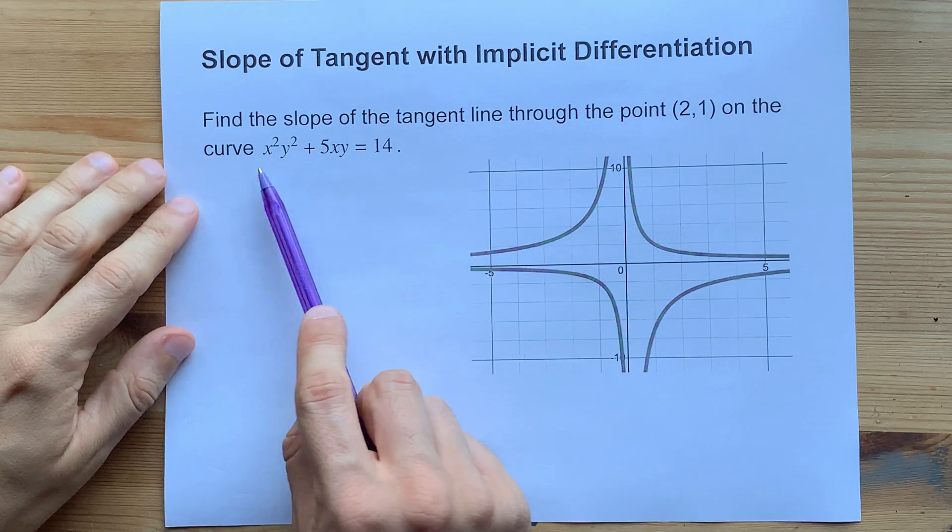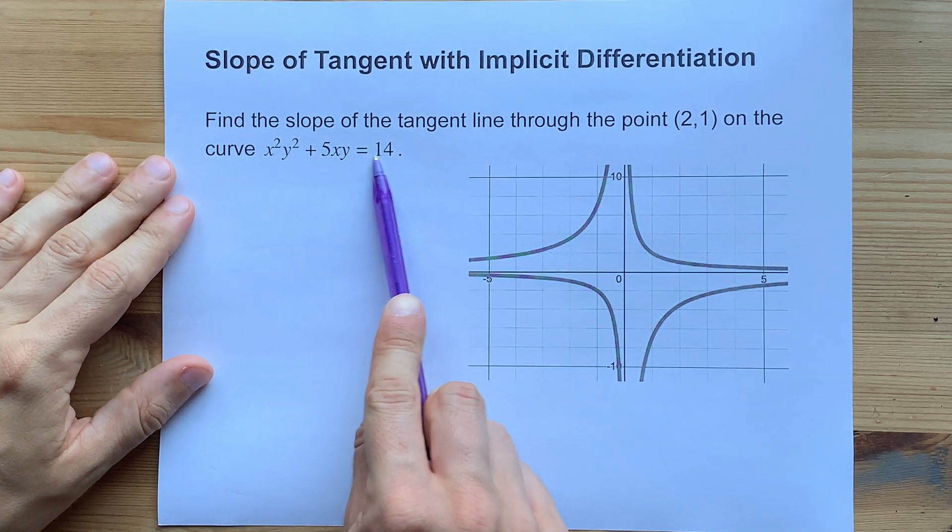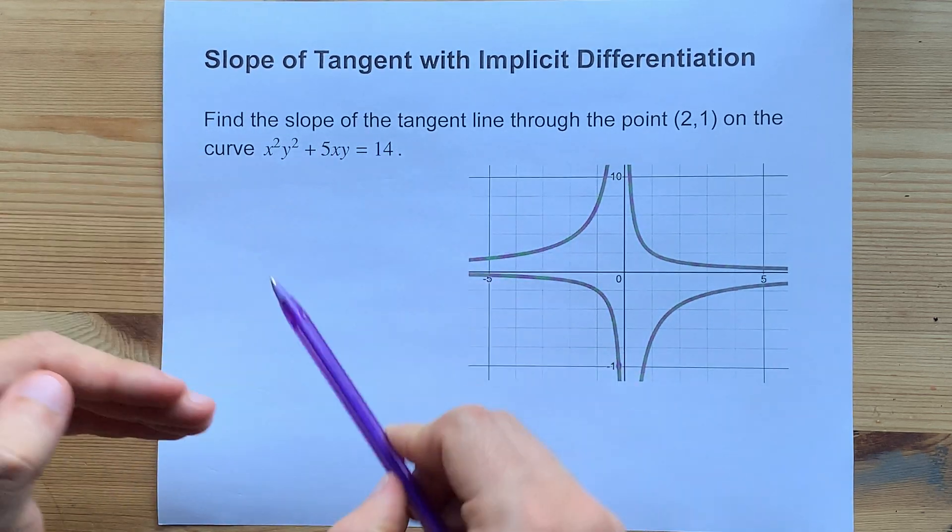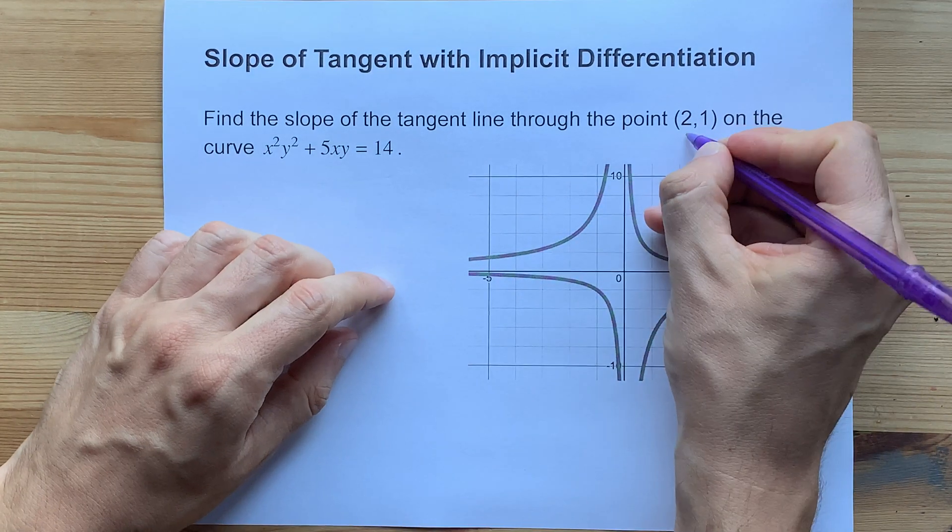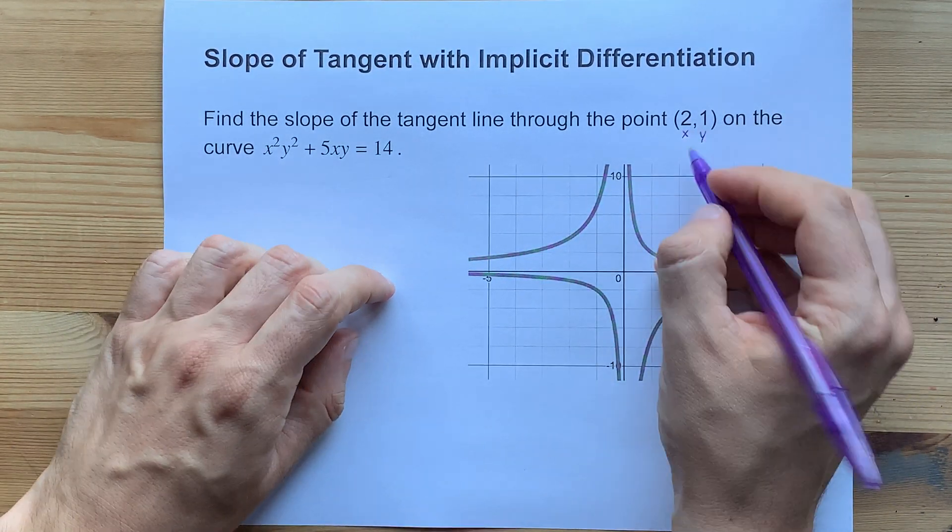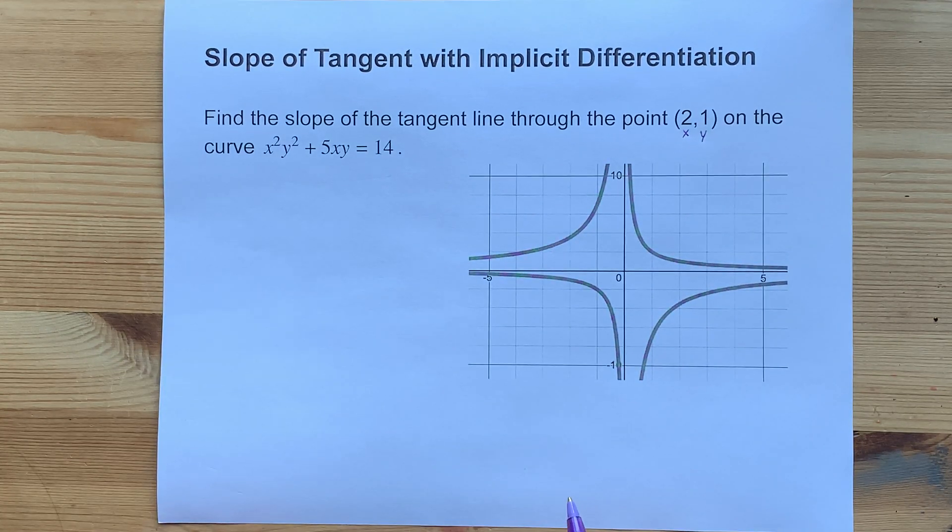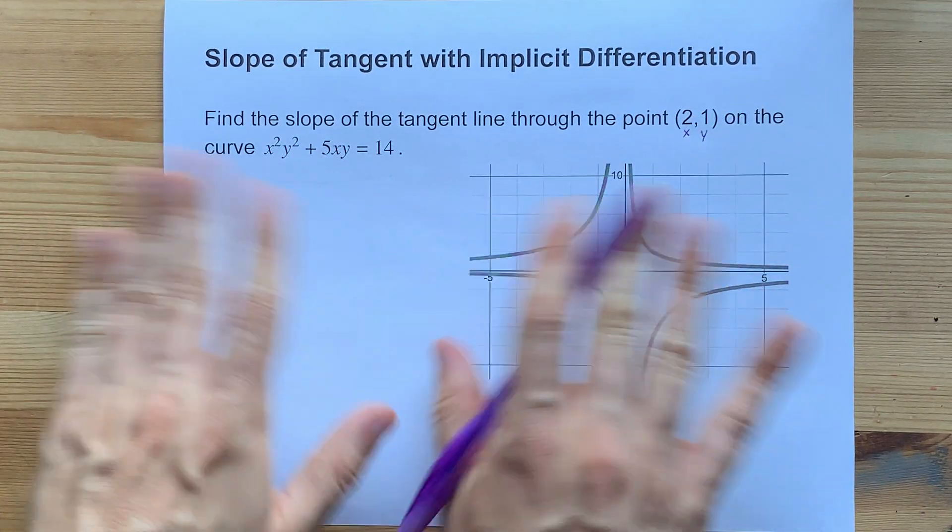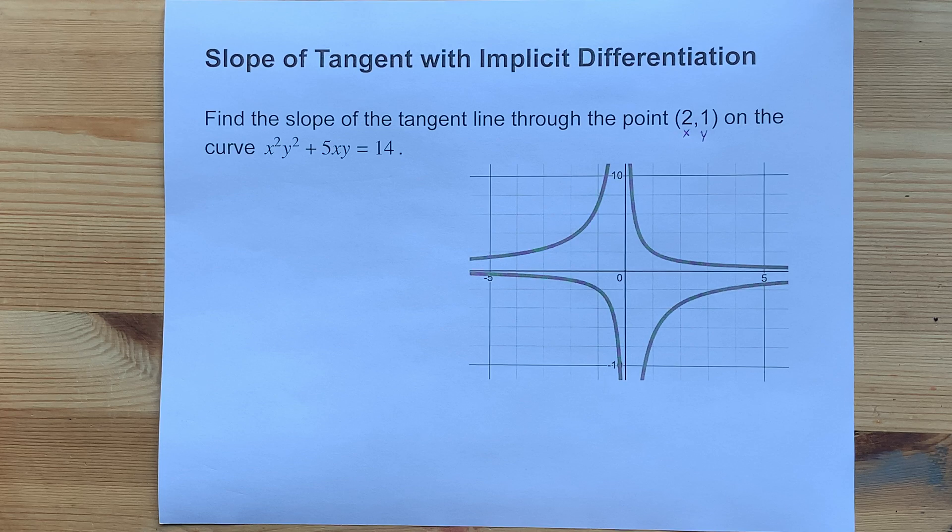All you'll have to do is implicitly differentiate the function you're given, then plug in 2 for x in my case, 1 for y, the values you were given, and then you can solve for y prime directly, like grade 9 again.